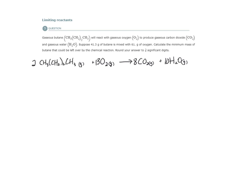Now let's look at the amounts of our starting substances. It says suppose that 41.3 grams of butane, so we have 41.3 grams of this to start, is mixed with 61 grams of oxygen. Calculate the minimum mass of butane that could be left over by the chemical reaction. So we want to know how much of this is left over.